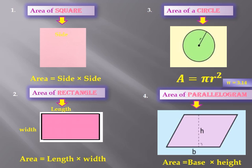Area of a square is equal to side times side, or side squared. Area of a rectangle is equal to length times width. Area of a circle is equal to π r squared, and we always take π approximately equal to 3.14. Area of a parallelogram is equal to base times height.